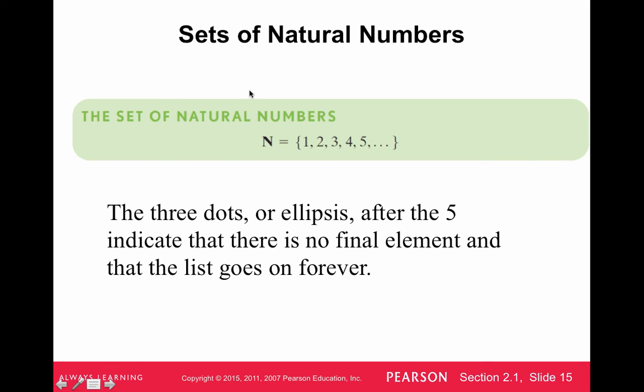Another set that we'll see a lot of is the set of natural numbers, which are just essentially our counting numbers that start at 1, 2, 3, 4, 5, and go on forever. You'll see the dot, dot, dot, which just means that the pattern goes on forever up by ones. So natural numbers are just our counting numbers.